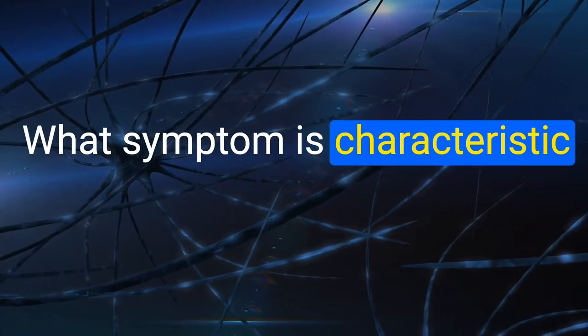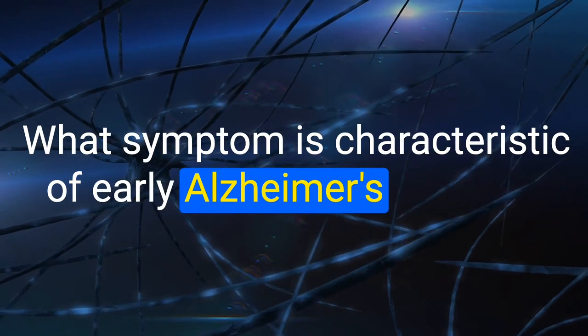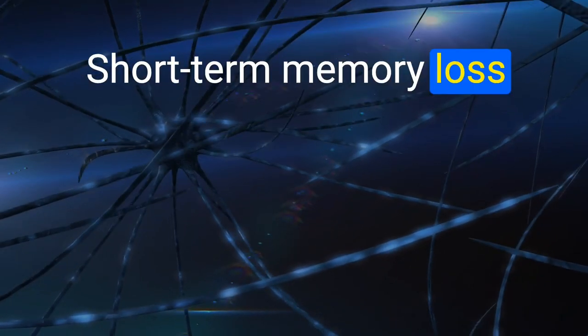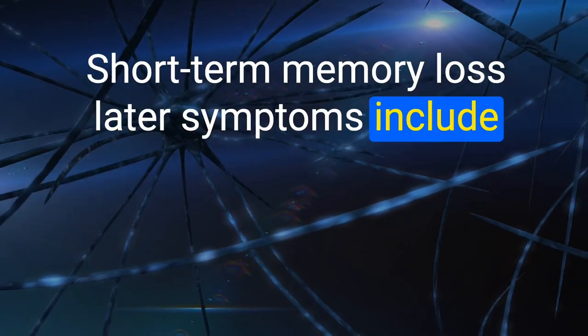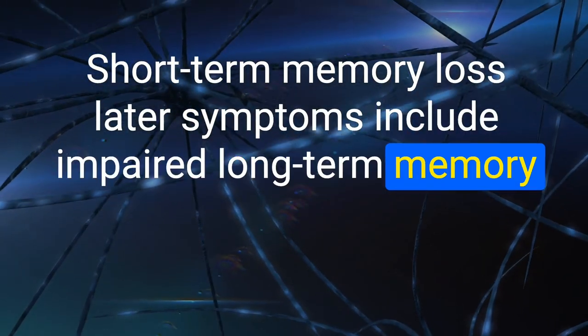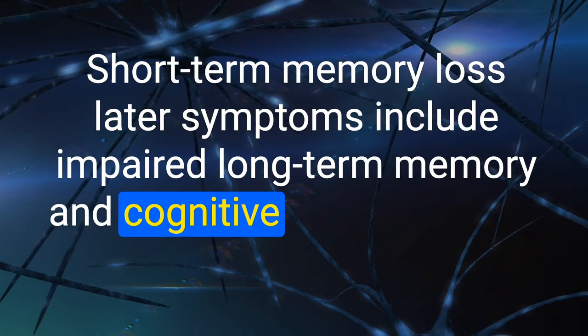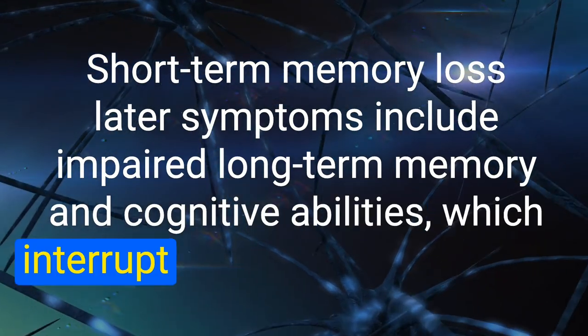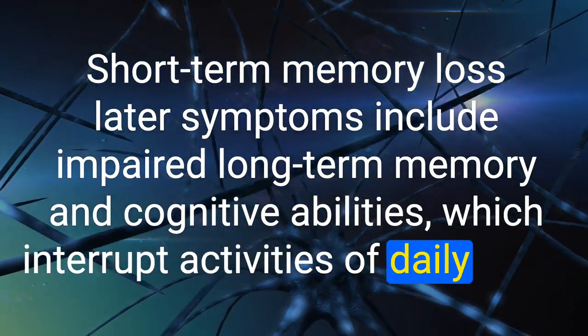57. What symptom is characteristic of early Alzheimer's disease? Short-term memory loss. Later symptoms include impaired long-term memory and cognitive abilities, which interrupt activities of daily living.